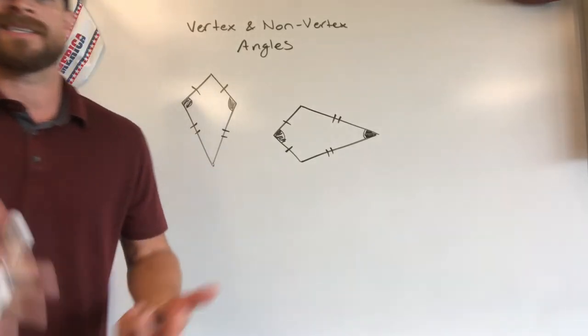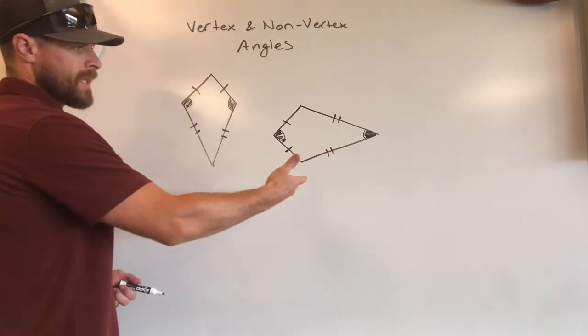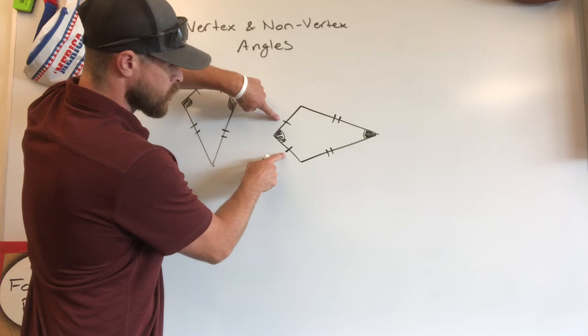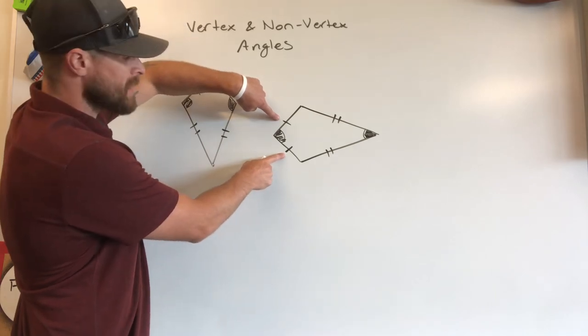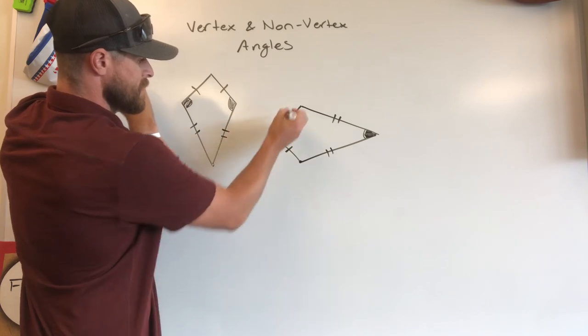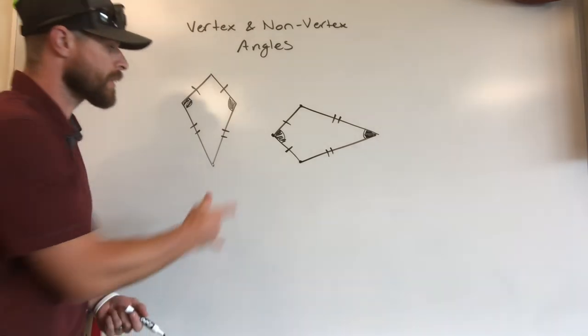Let's talk about vertex and non-vertex angles. What you're looking at here on the right side is an example of vertex angles. Vertex angles are formed between two congruent sides. So these two sides are the exact same from this point to this point. We have the exact same distance from this point to this point. We're dealing with congruent sides there and you can tell that through the markings.